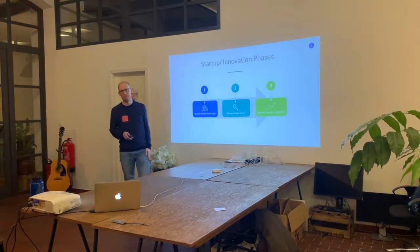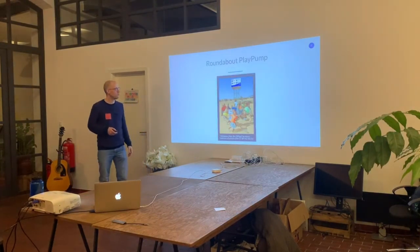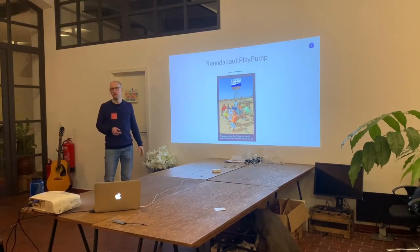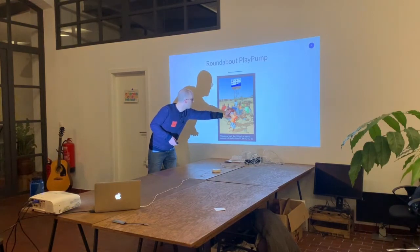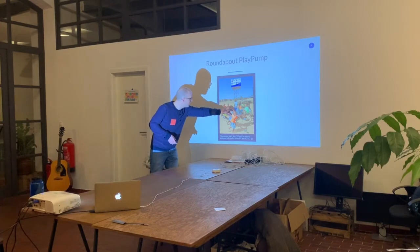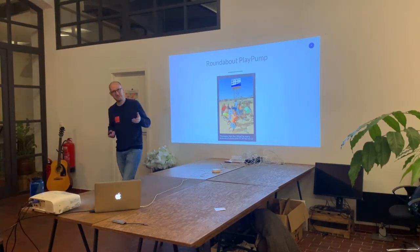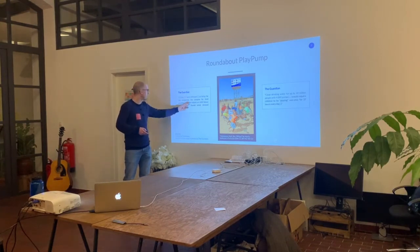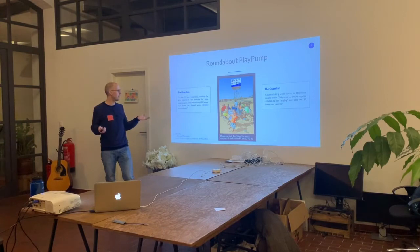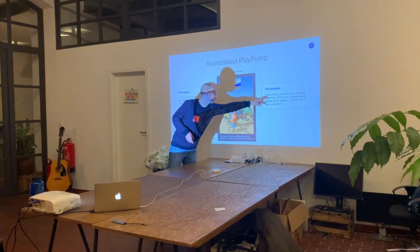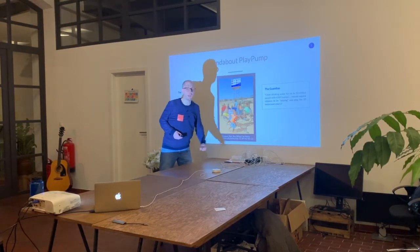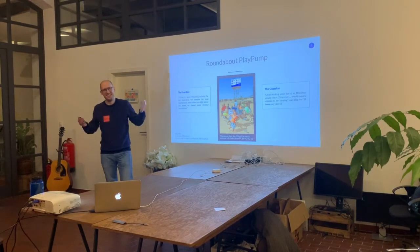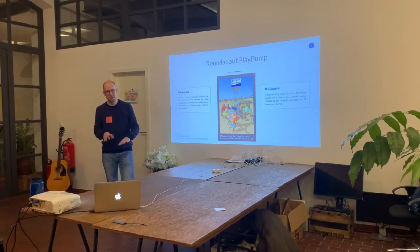In my opinion, the main problem is that non-profits jump through step one and two and basically start with step three. One really good example is called the Roundabout Play Pump. The playground roundabout is connected to a water tank, so children playing pumps water up — which sounds amazing. But a Guardian article said the project was criticized as being far too expensive, too complex for local maintenance, over-reliant on child labor, and based on flawed water demand calculations. To provide clean drinking water for up to 10 million people with 4,000 pumps, children would have to play non-stop for 27 hours a day. Yet they actually built 1,000 of these pumps before the press got so bad that they had to re-evaluate.